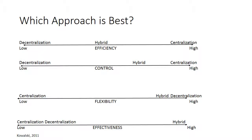Efficiency refers to how quickly and well something can be done. With a decentralized approach, efficiency might be low because many different schools are trying to do the same thing, whereas a centralized approach might be high because decisions are made and implemented rapidly. A hybrid might fall somewhere in the middle. However, if you're looking for maximum control, you definitely want to go with a centralized plan where strict control is maintained over public relations. A decentralized plan will give you less control, and a hybrid, again, somewhere in the middle.